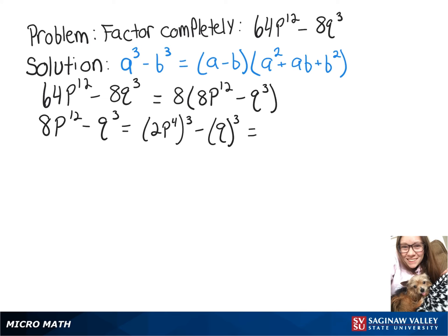And now we can rewrite that as 2p to the 4th minus q times 2p to the 4th squared, which is 4p to the 8th, plus 2p to the 4th q plus q squared.